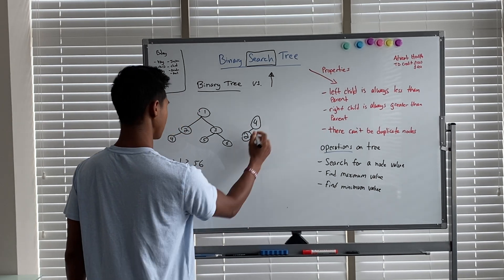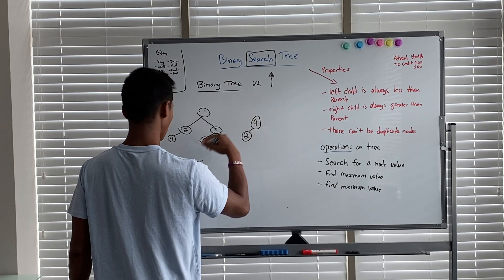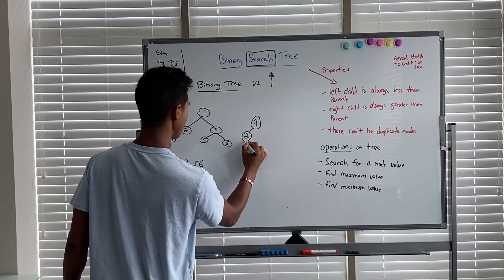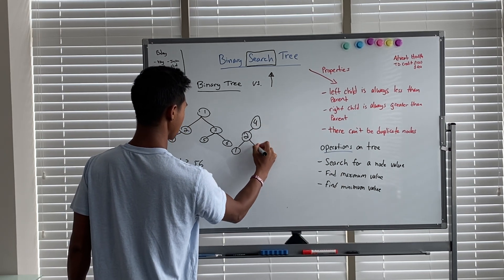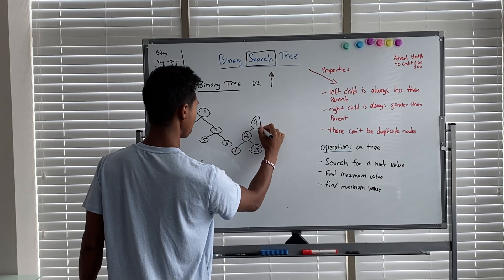the left hand side. One is less than two, so one is less than four - left hand side. One is less than two - left hand side. Three is less than four but greater than two. Five is greater